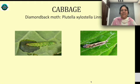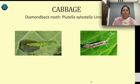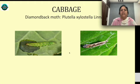Welcome to Srilatha Organic Farming. Today, my cabbage is affected by Diamondback Moth. This is the larval stage. This is the pupa. This is also a Lepidopteran insect — Plutella xylostella.